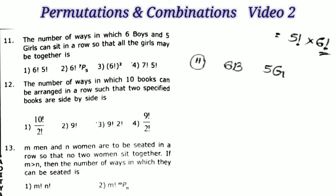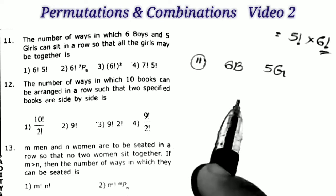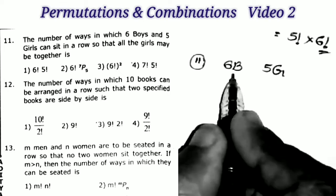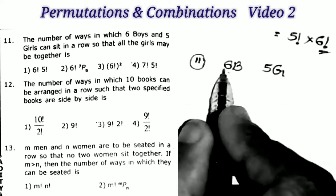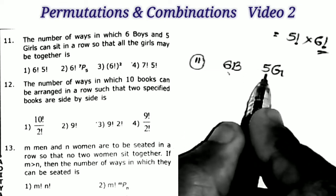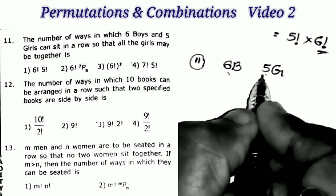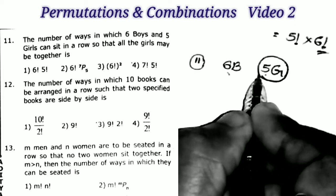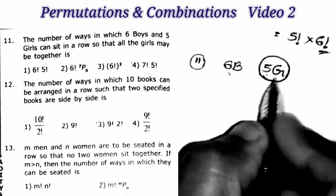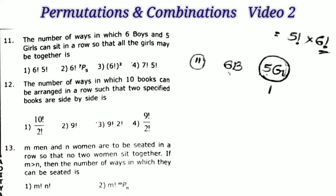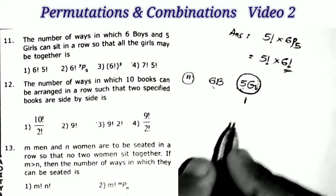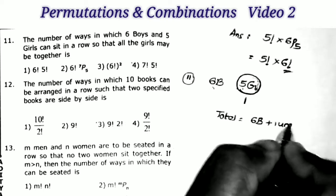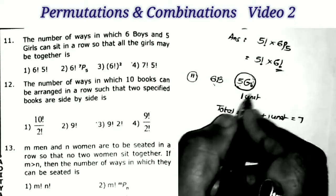Next question, sum number 11: the number of ways in which six boys and five girls can sit in a row so that all the girls may be together. We have to arrange six plus five, total 11 members in a row. The condition is all the girls may be together. Always remember: all the girls come together means we treat all the girls as one unit. Therefore total is equal to six boys plus one unit, which equals seven.